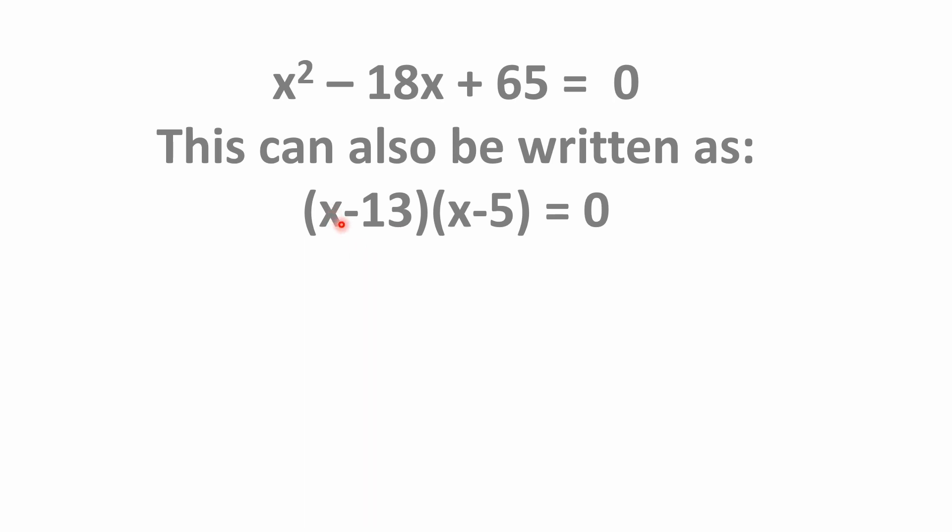And if you look at that, if you plug a 13 into here, that makes this 0. Well, 0 times anything is going to be 0. If x happens to be a 5, you got 5 minus 13 is negative 8. But 5 minus 5 is 0. So negative 8 times 0 would be 0. So that does all work out. You can go back and plug that in to make sure that your answers make sense.